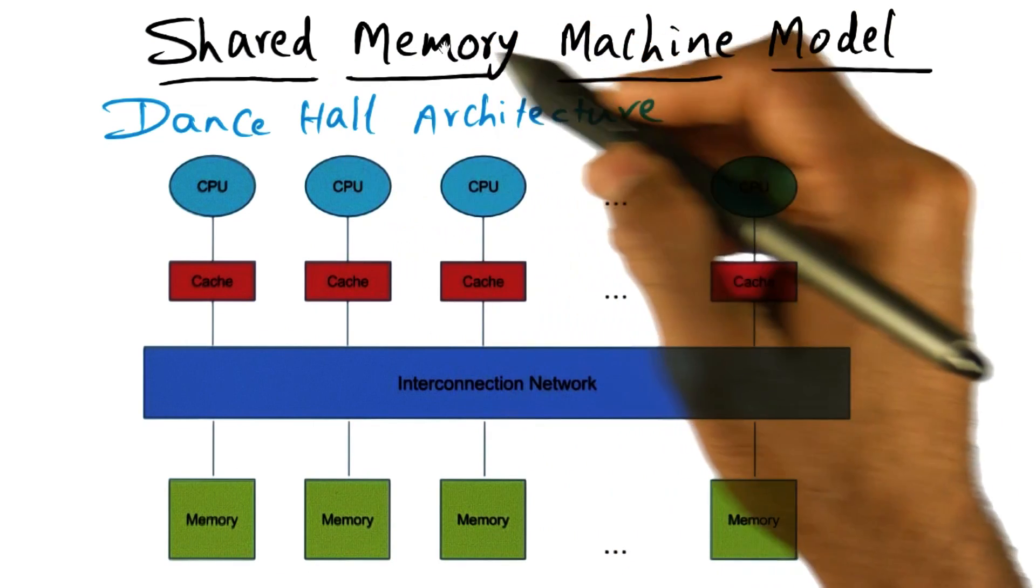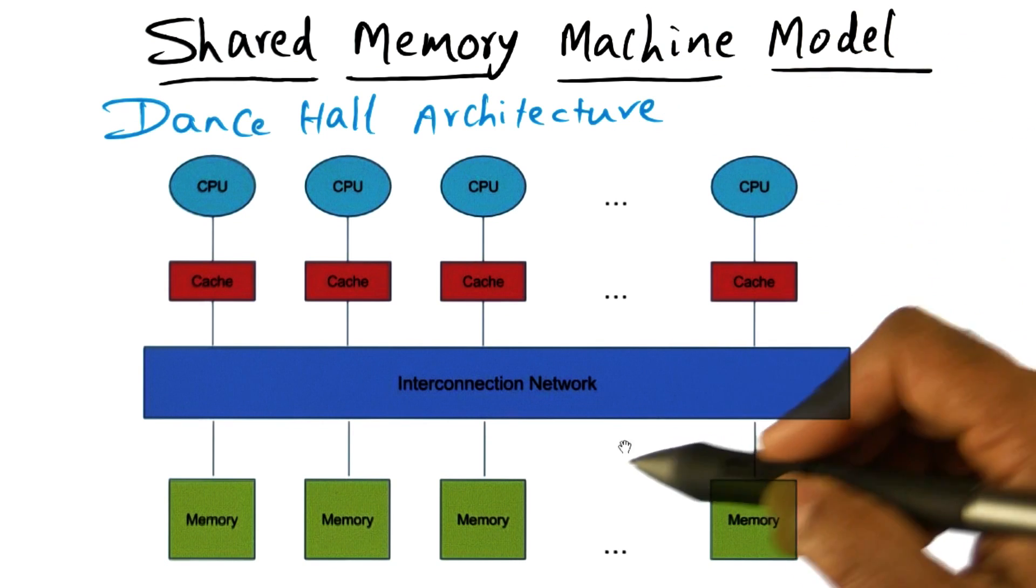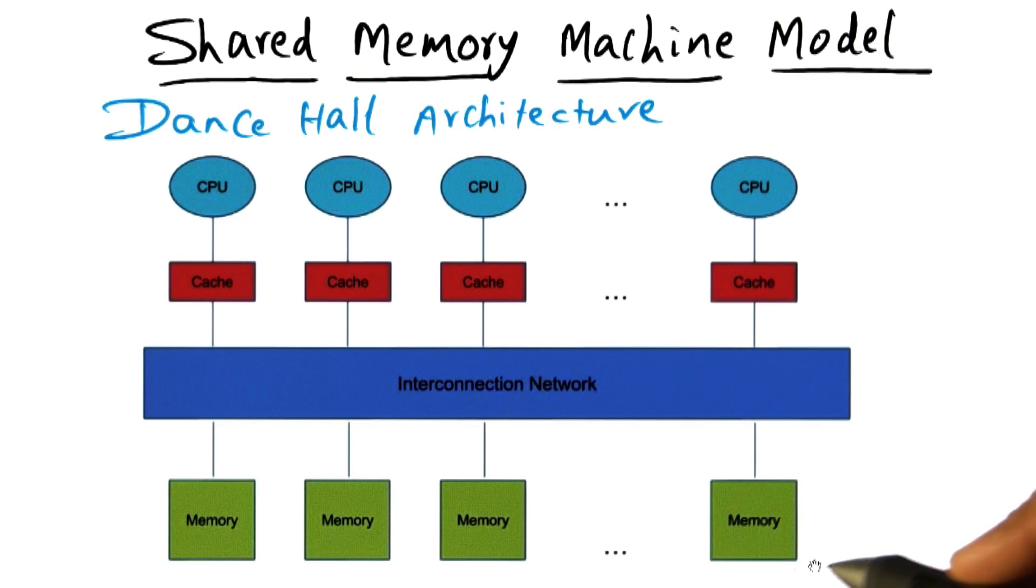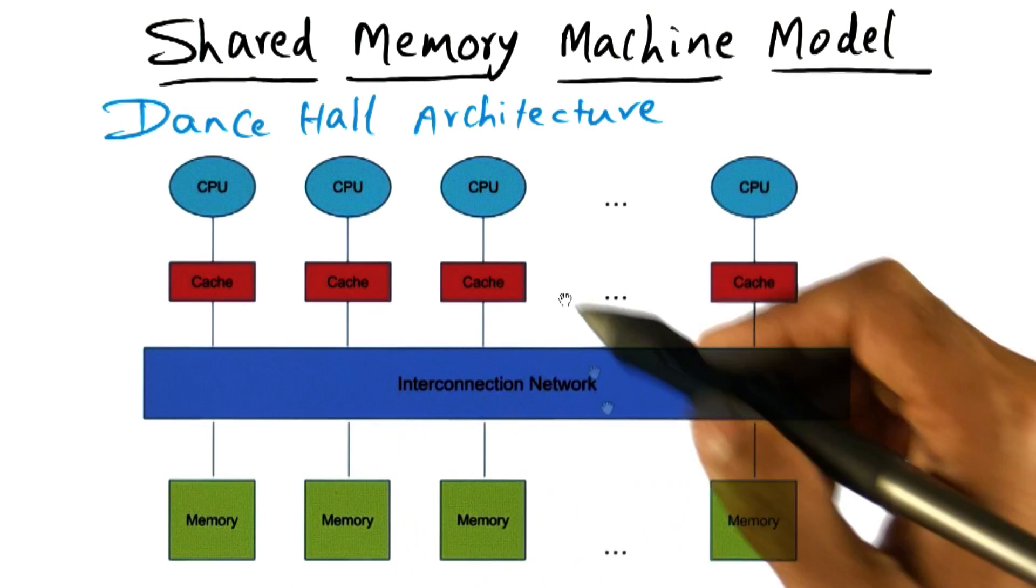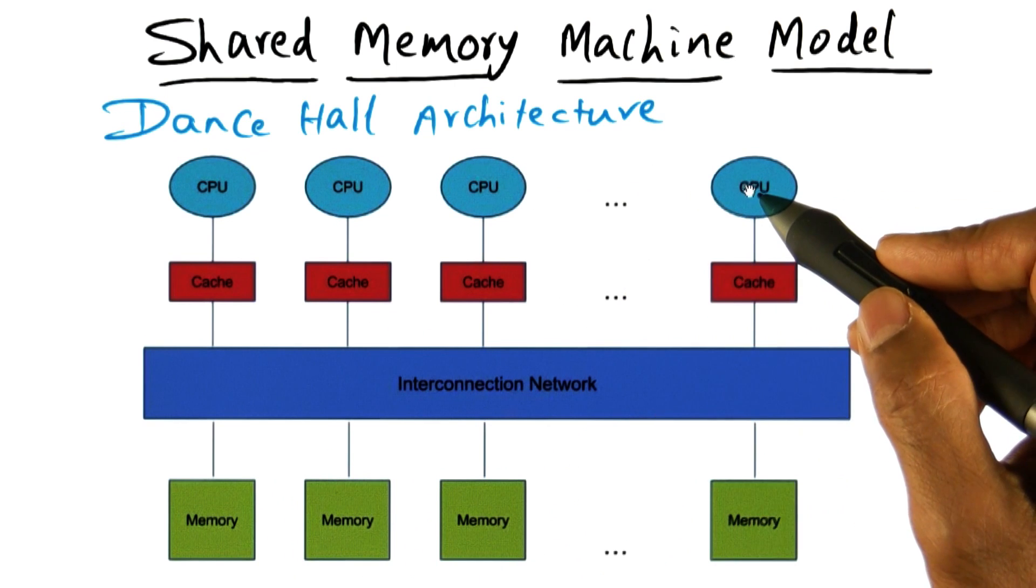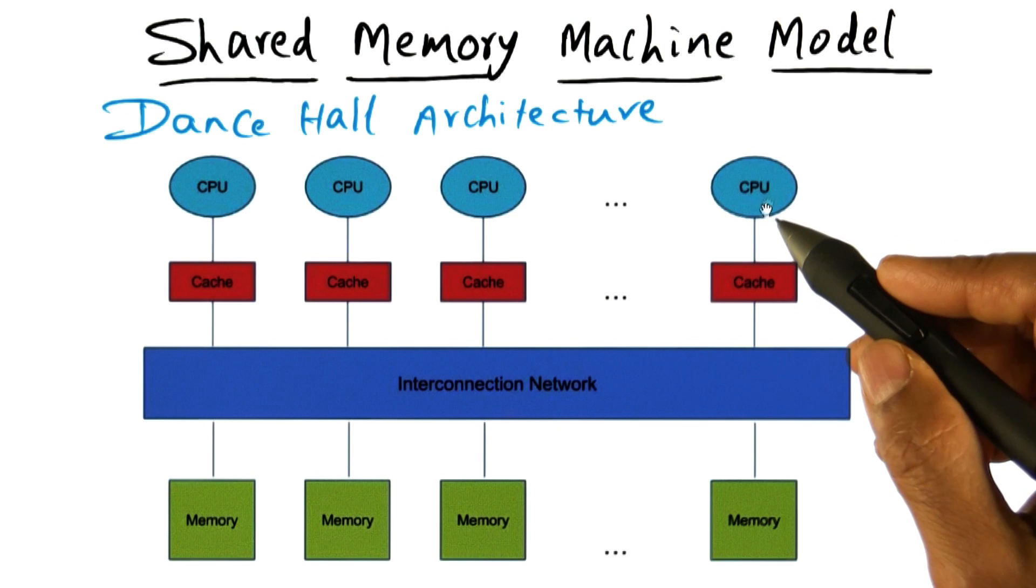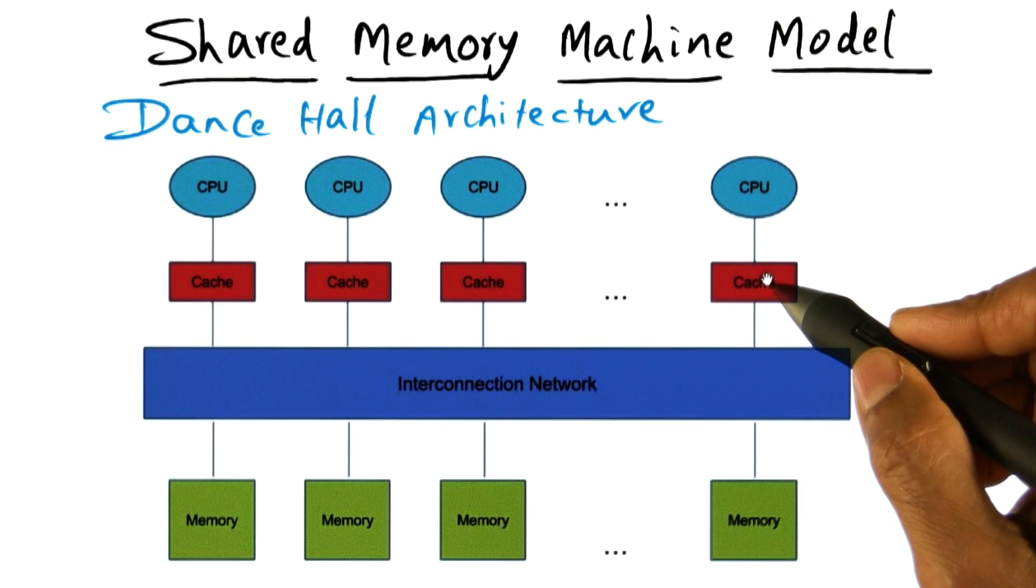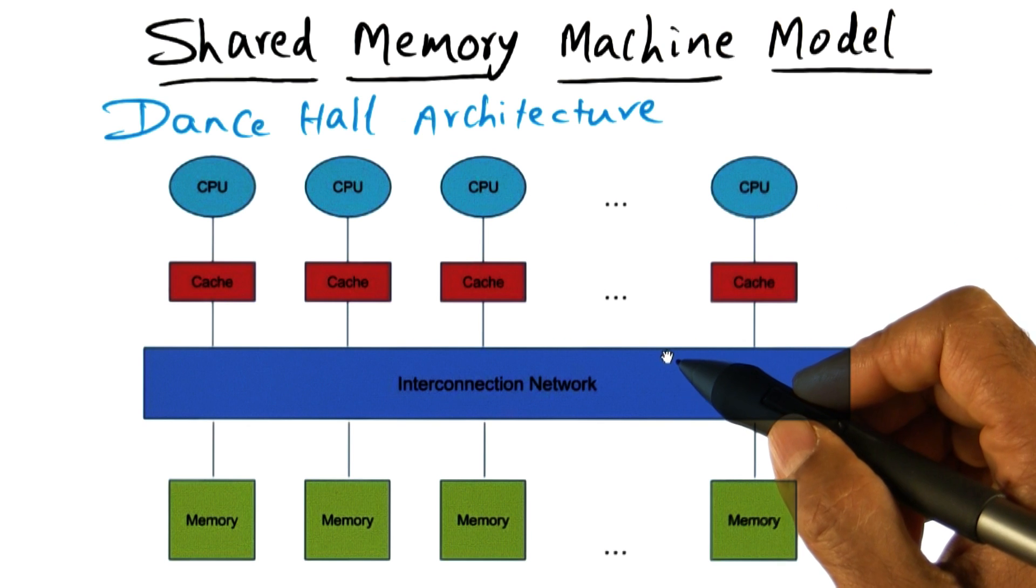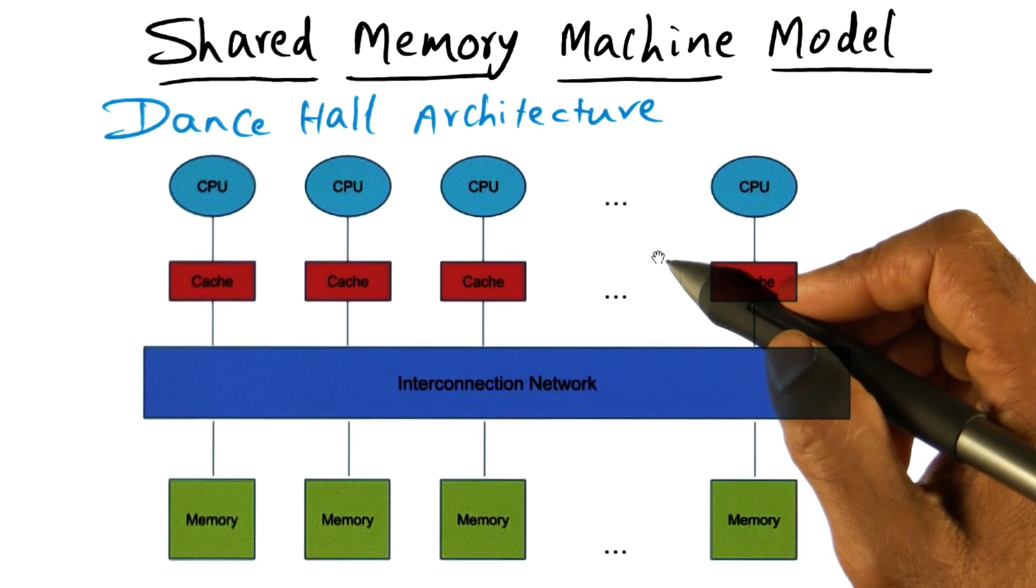The key thing is it's a shared memory machine. What that means is that the entire address space defined by the memories is accessible from any of the CPUs. That's one common thing you'll see in all three styles. In addition, there is a cache associated with each of these CPUs. So this is a dance hall architecture.